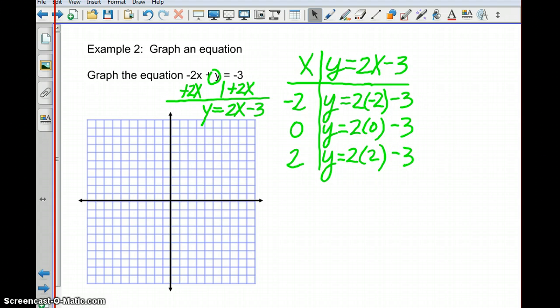So here, 2 times negative 2 is negative 4 minus 3 is negative 7. So when x is negative 2, y is negative 7. That gives us one point. Here, 2 times 0 is 0, minus 3 is negative 3. So that gives us the point (0, -3). And then finally, this will give us the value of 1. So when x is 2, y is 1. So we have three points right now.